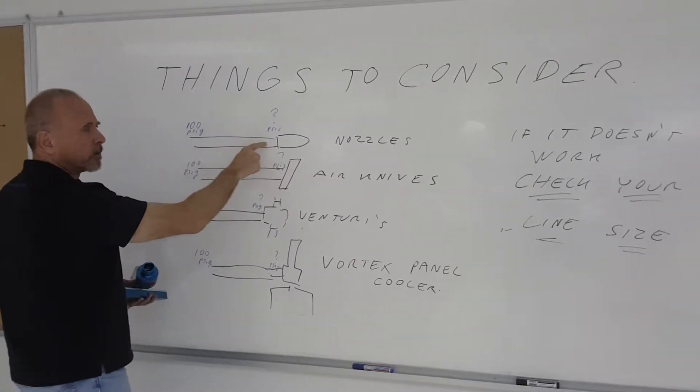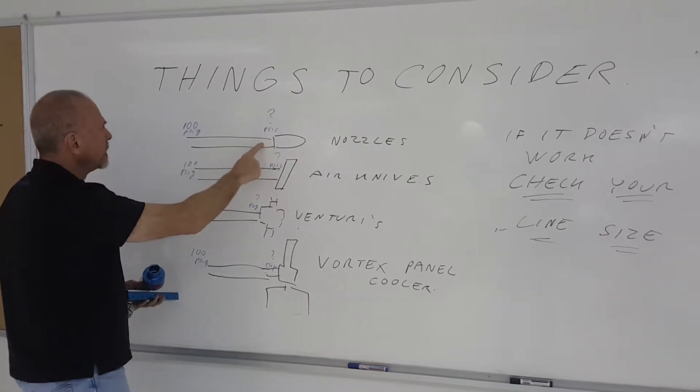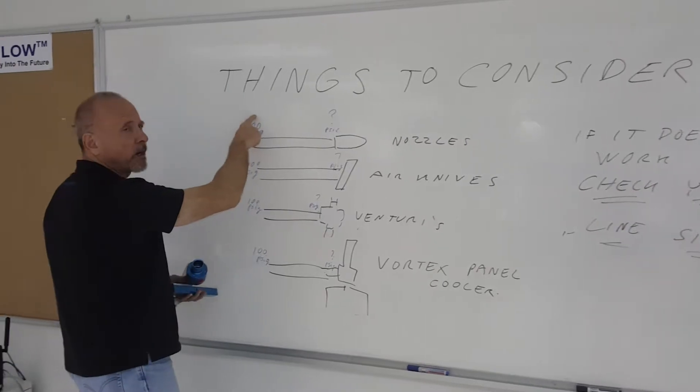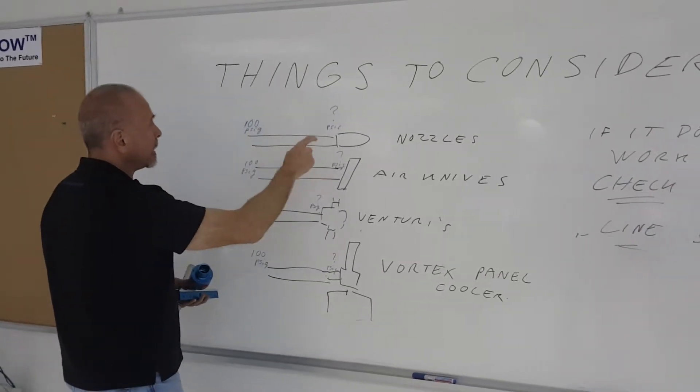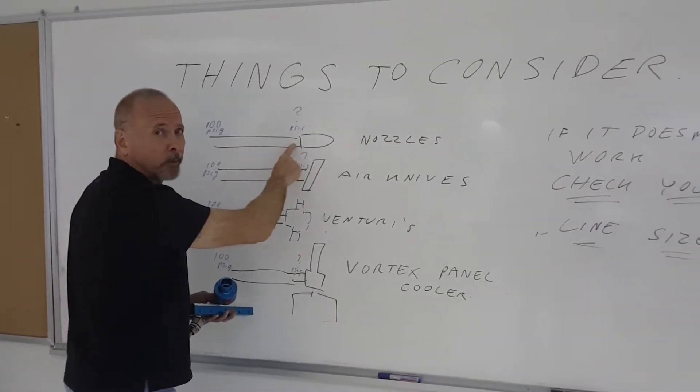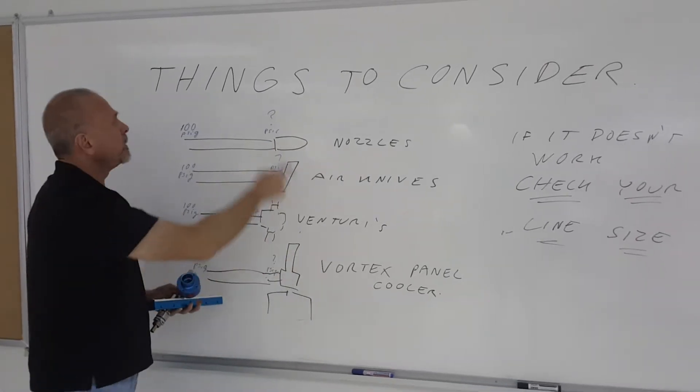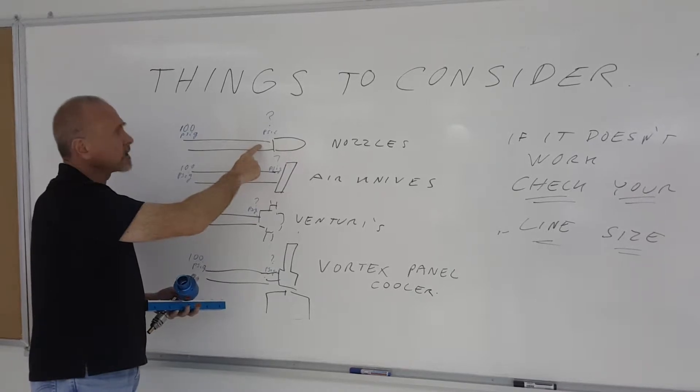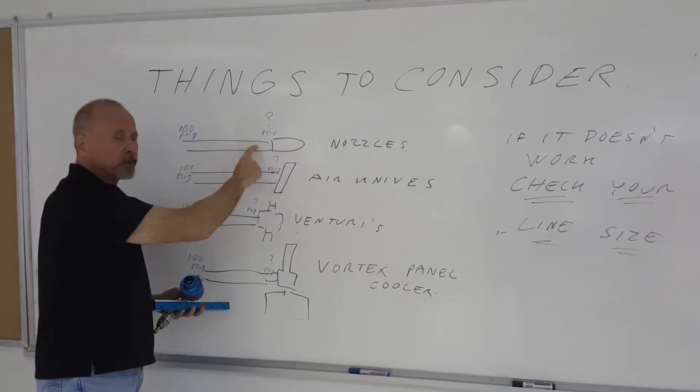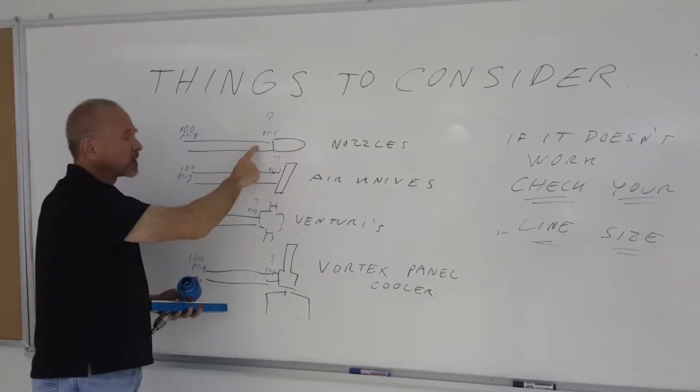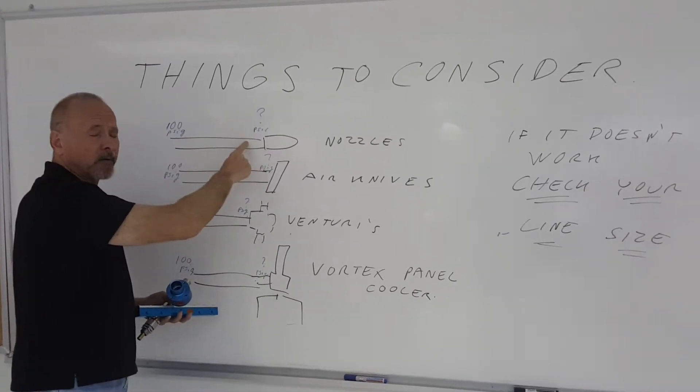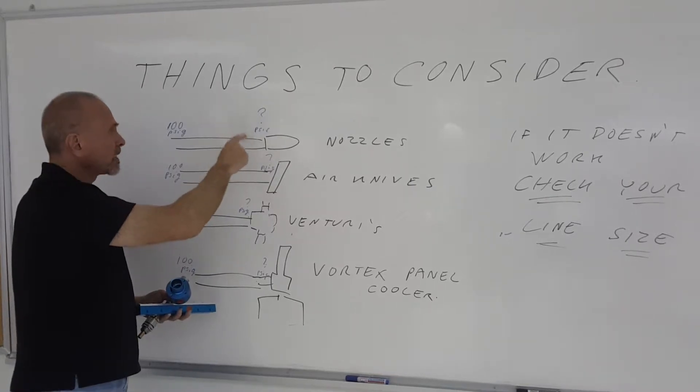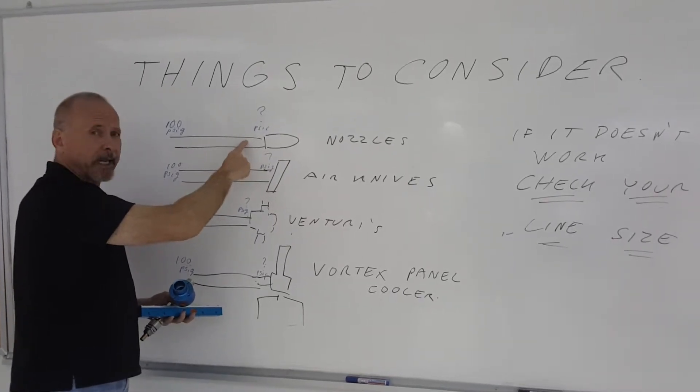So they may be reading at a pressure gauge 100 pounds per square inch upstream, but it may not be that at the point of use. If you want to be sure, you put a pressure gauge a few inches upstream from that point of use and you measure the pressure while it's running, because while it's running, that's when the air is flowing. They'll give you a reading of the actual pressure at the point of use. If it's much less than what the specs say, then obviously you've got too high a pressure drop in the line.